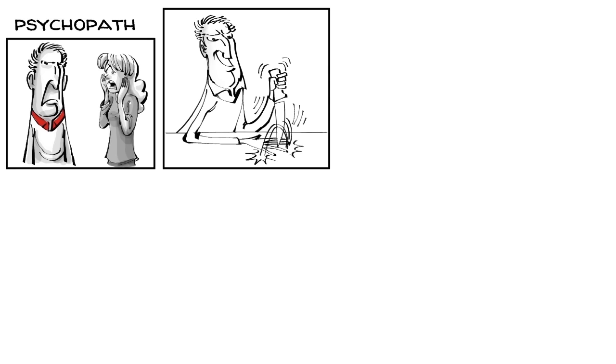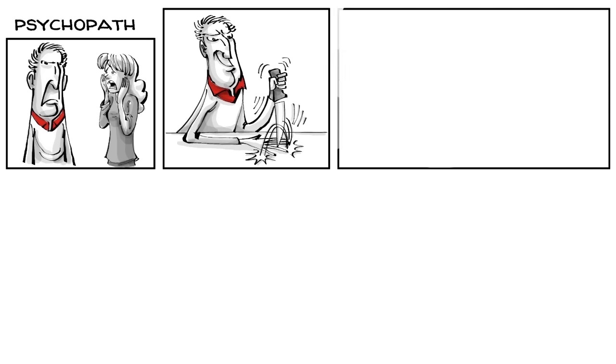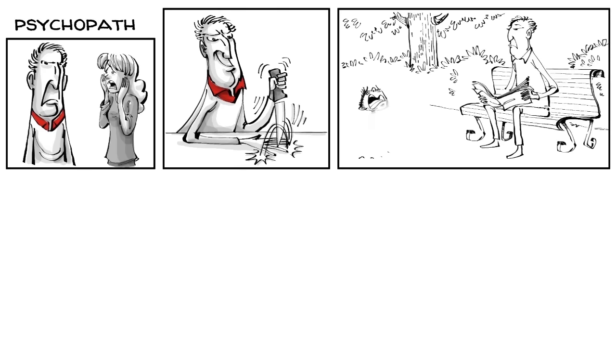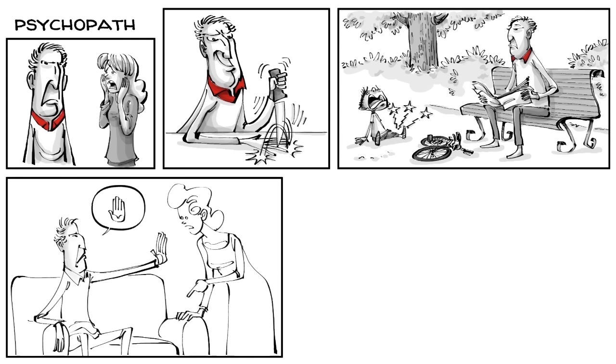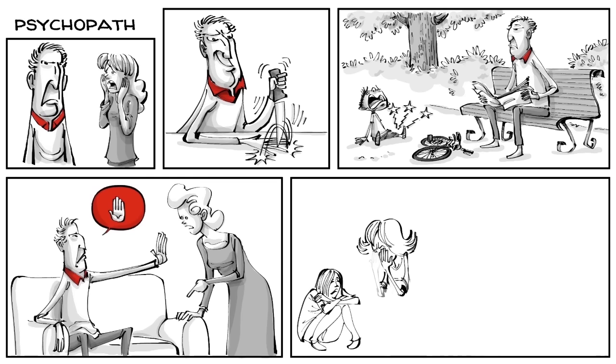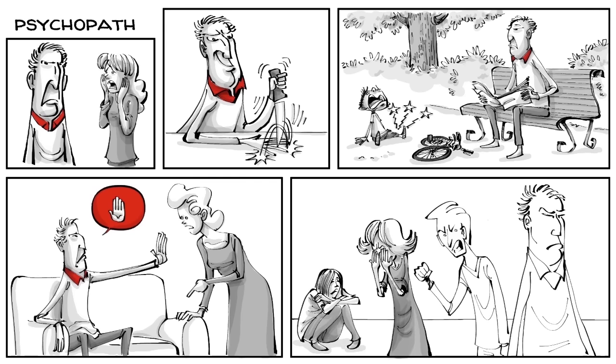When you are a psychopath, you come across as cold and others think you are scary. You also show little to no fear, act impulsively and you enjoy mental thrills. Those high on the spectrum don't form any emotional bonds. The result is a complete lack of compassion. That means they have no problem being mean. If something terrible happens, they later often don't feel any remorse or guilt.